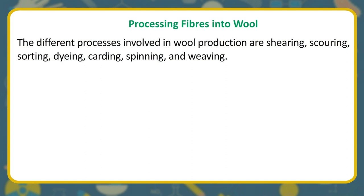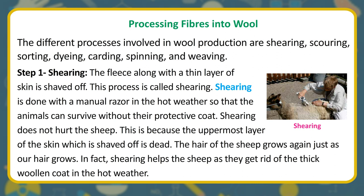Processing Fibers into Wool involves these steps: shearing, scouring, sorting, dyeing, carding, spinning, and weaving. Step 1 — Shearing: The fleece along with a thin layer of skin is shaved off; this is called shearing. It is done with a manual razor in hot weather so that the animals can survive without their protective coat. Shearing does not hurt the sheep because the uppermost layer of skin shaved off is dead. The hair grows back just as our hair grows. In fact, shearing helps the sheep as they get rid of the thick woolen coat in hot weather.